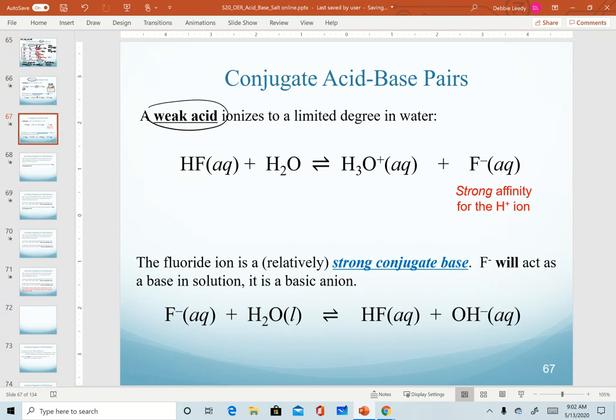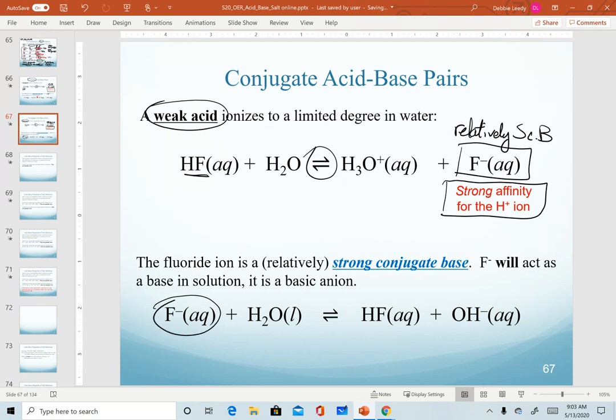On the other hand, a weak acid such as HF will set up equilibrium. And so when we produce fluoride in solution, this is a relatively strong conjugate base. Anytime we have fluoride ion floating around in solution as the product of the dissociation of a salt, for example, that will react with water to produce hydroxide in solution. So fluoride will act as a base. It is the conjugate base of HF. And that's confirmed when we see that it produces hydroxide.